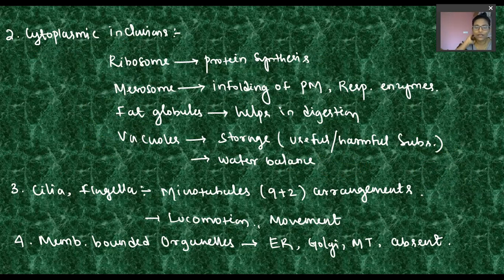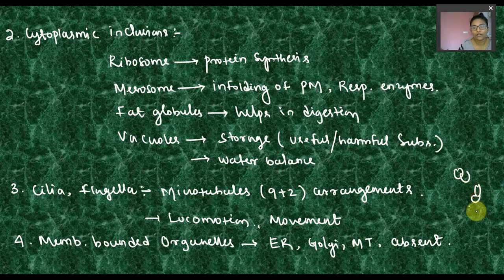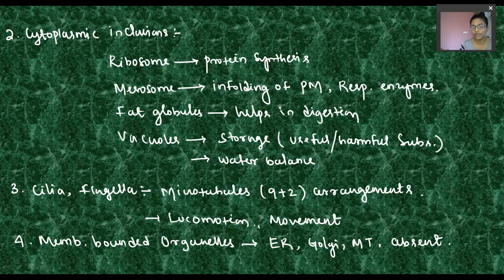Cilia and flagella both help in locomotory activity. Flagella have microtubules. This is an essential topic for entrance examinations. Flagella have a 9+2 arrangement — nine doublet microtubules arranged around two central ones — which aids locomotion and movement.